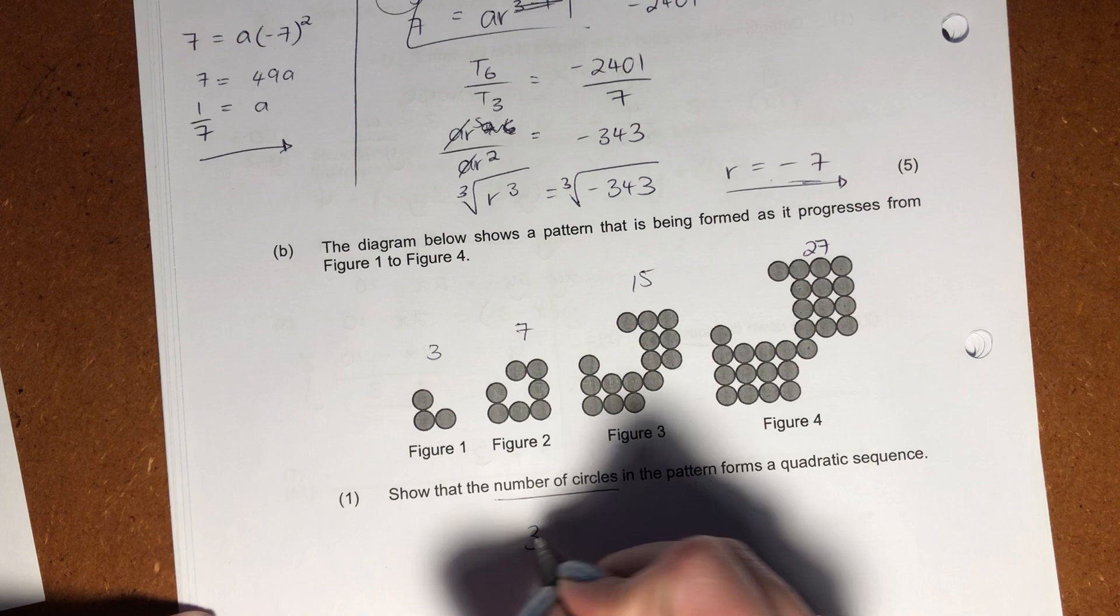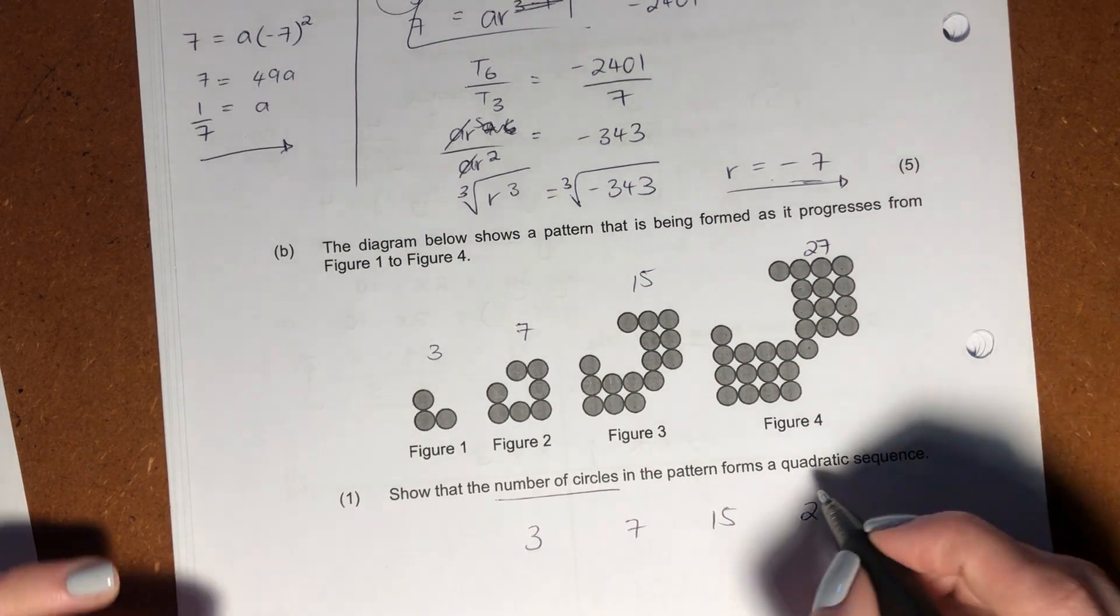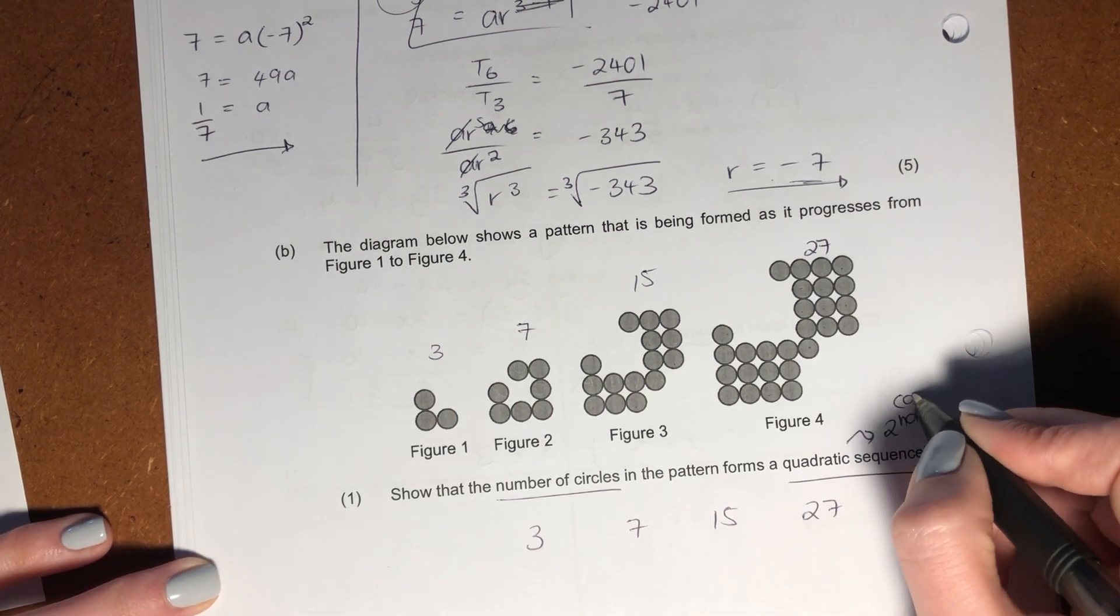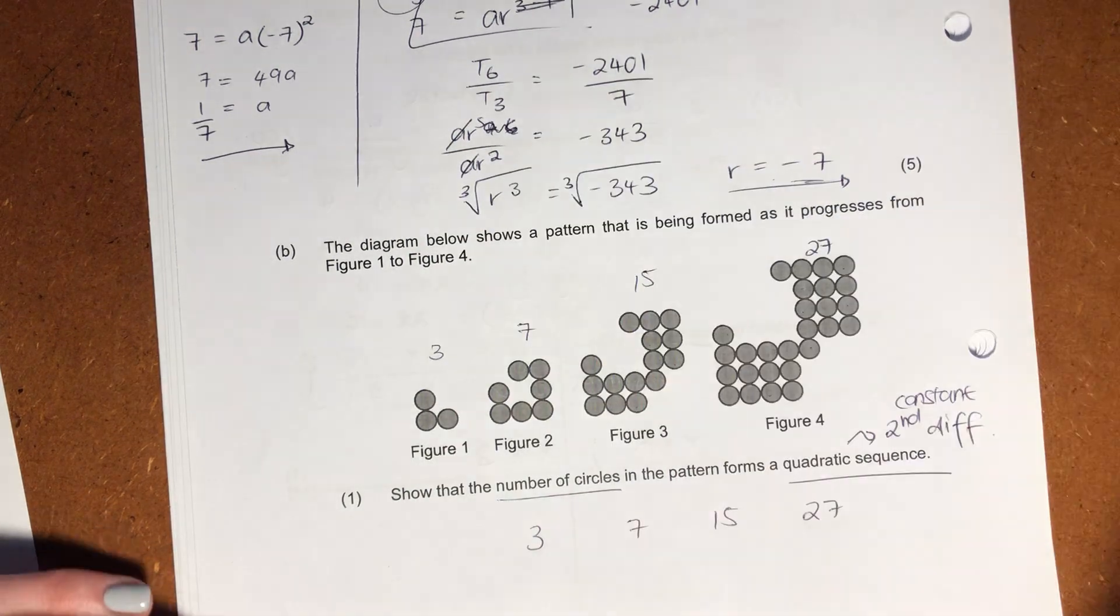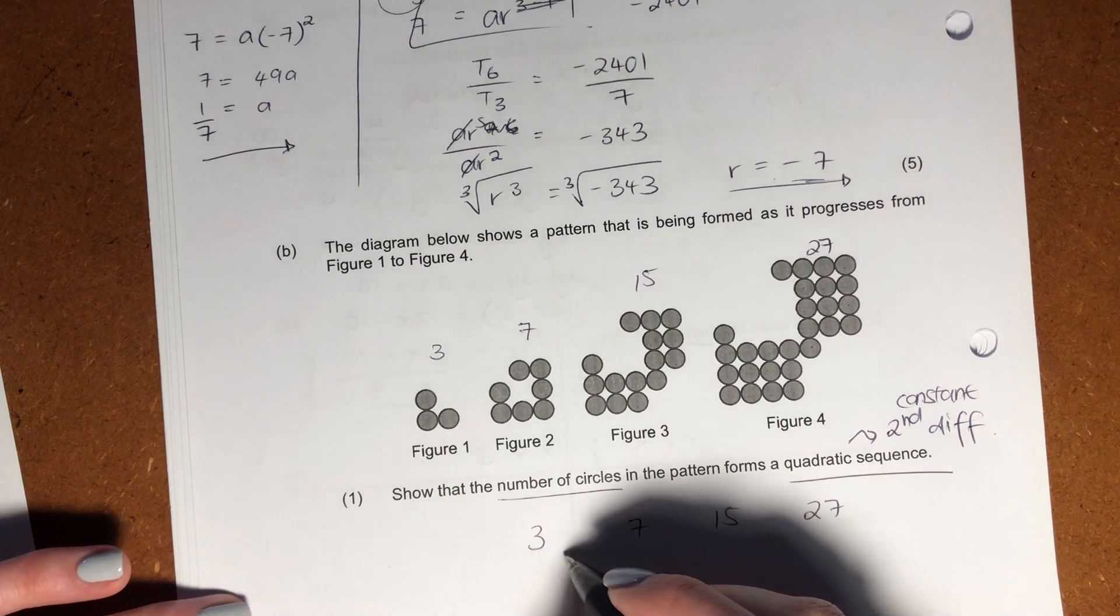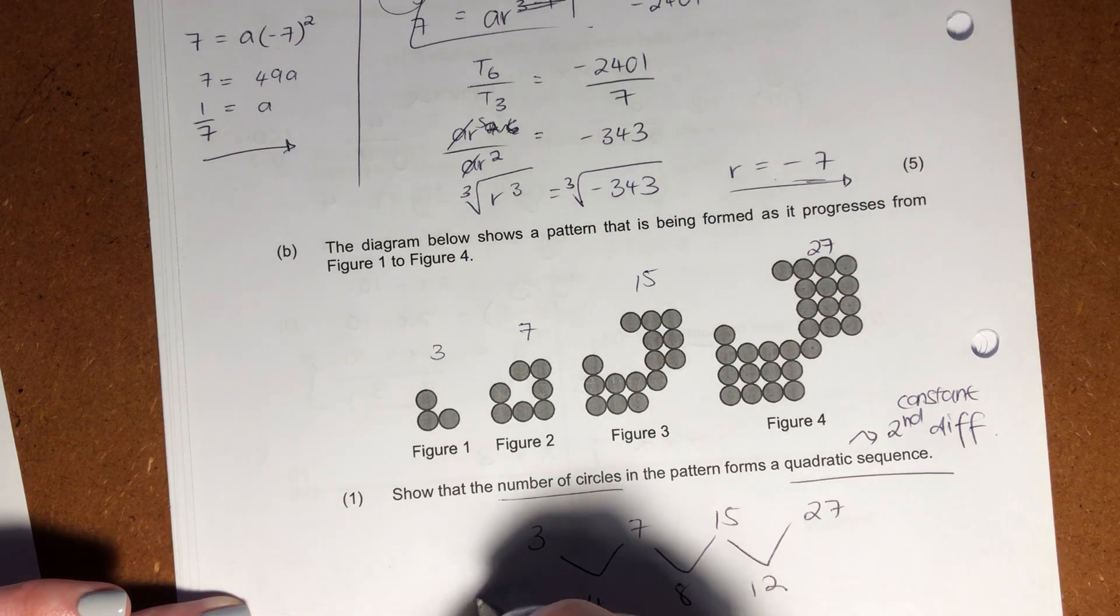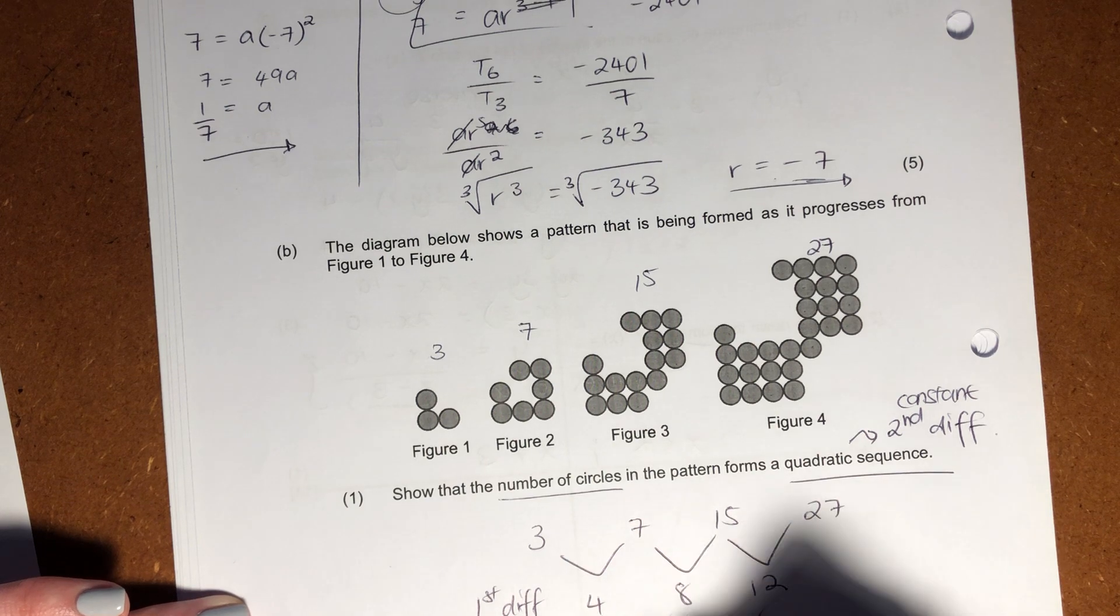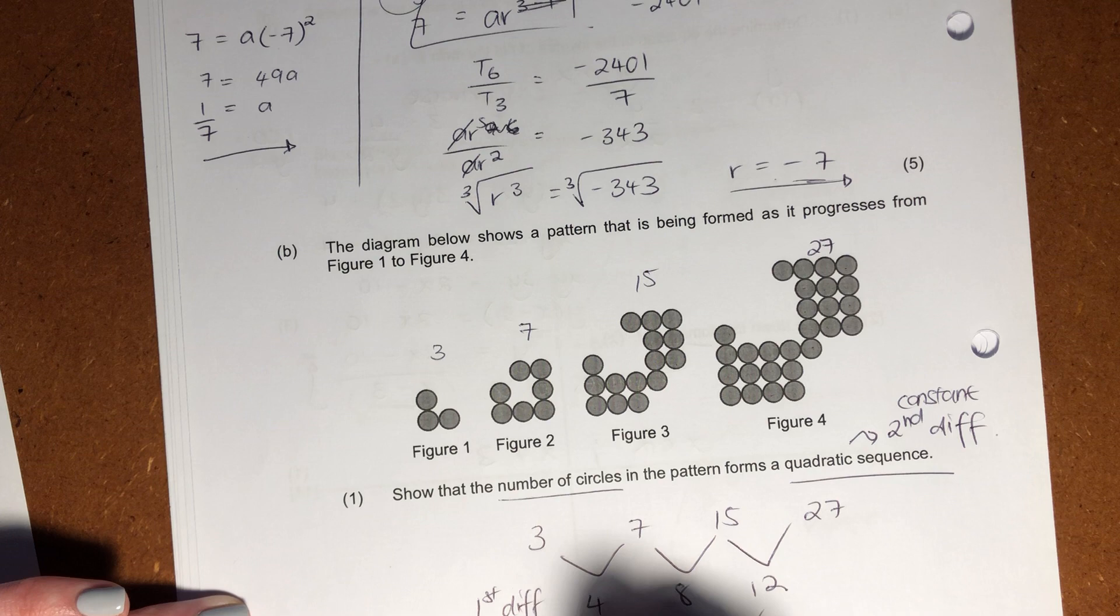Okay, so this is how our sequence is going. So when it says quadratic, what are you thinking? You should be thinking, well, I have a constant second difference. Okay, you need to be thinking that that's a definition. You need to know your definitions in math. There's an element of learning there. So this is 4, this is 8, this is 12. That's our first difference.